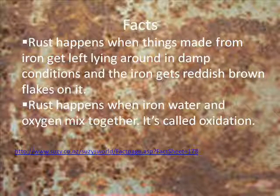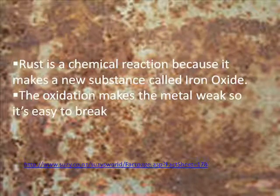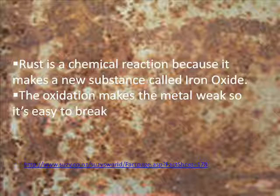Facts: rust happens when things made from iron get left lying around in damp conditions, and iron gets reddish brown flakes on it. Rust happens when iron, water, and oxygen mix together — it's called oxidation. Rust is a chemical reaction because it makes a new substance called iron oxide. The oxidation makes the metal weak so it's easy to break.